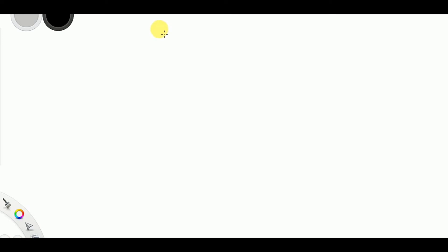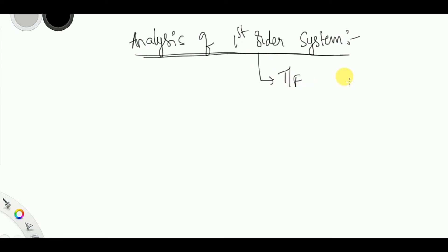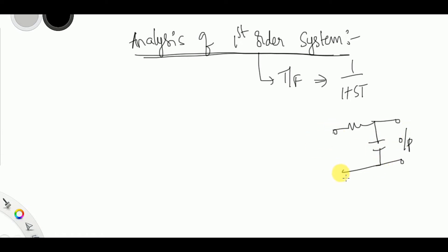Hello viewers, welcome to my channel Knowledge Unlimited. In this video I am going to explain about the analysis of first order system. As I already explained, I derived the transfer function of the first order system as 1/(1+sT), which is the basic RC network. You can go through that video so this can be considered as a continuation of it. In this video I am going to explain each and every term used in the series so far.